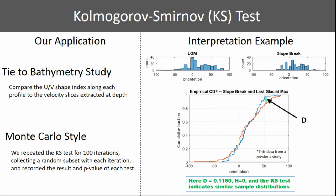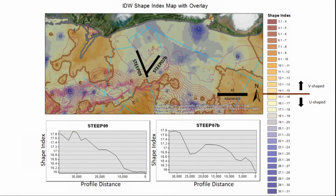How do we relate this back to our shape index? We're going to try to use the Kolmogorov-Smirnov test, which simply tests if two samples are from the same distribution. We're going to use our UV shape index and our velocity slices to see if they could possibly be from the same distribution. As an example, I did this on another study between the last glacial max and the slope break, and found that those are actually from a similar distribution.